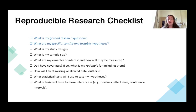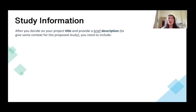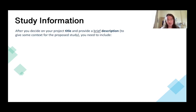The first two items on this checklist really situate your research project and get you started. The first is: what's my general research question? And then: what are my specific, concise, and testable hypotheses? Before you decide upon your research question and hypotheses, it's important to decide on a project title and provide a brief description — like an abstract-length piece of writing on the background to your project and why it's important.